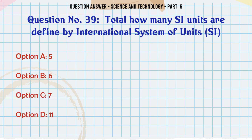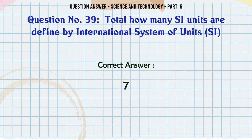Total how many SI units are defined by the International System of Units? A. 5. B. 6. C. 7. D. 11. The correct answer is 7.